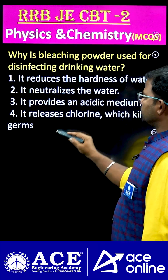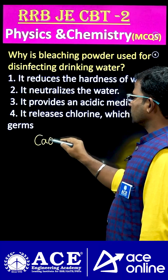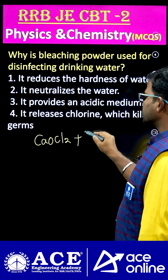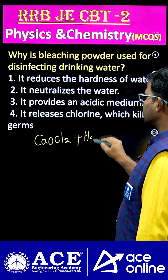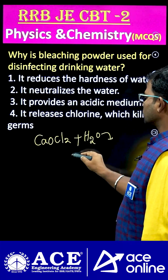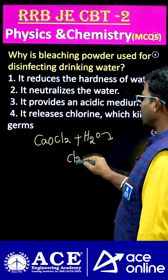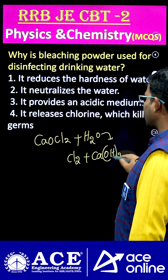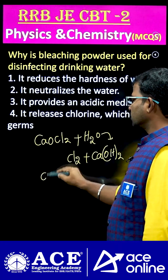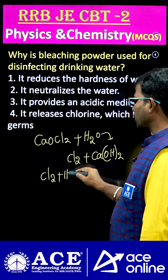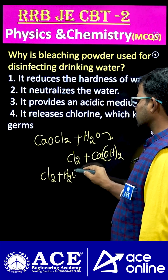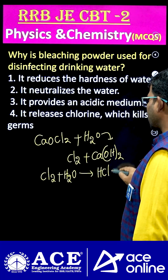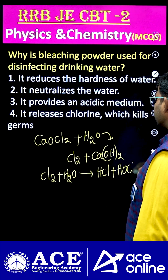If you consider bleaching powder CaOCl₂, this is the chemical formula. When it is added to water, what we get is mostly chlorine along with calcium hydroxide. This chlorine then reacts with the remaining water molecules to form HCl, hydrochloric acid, and hypochlorous acid.